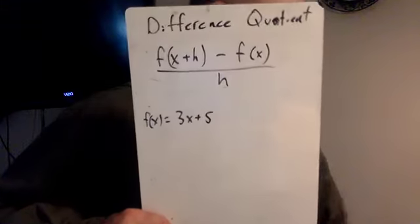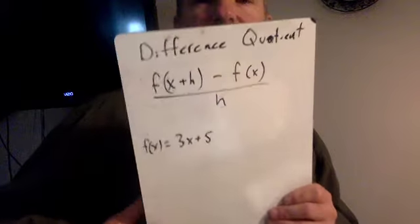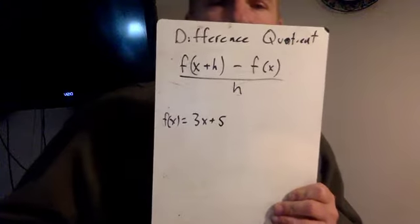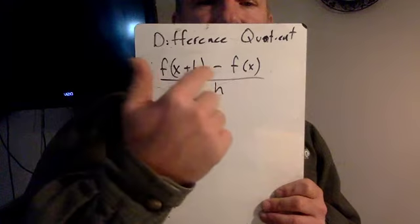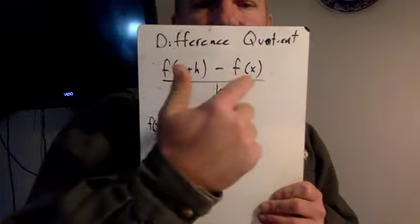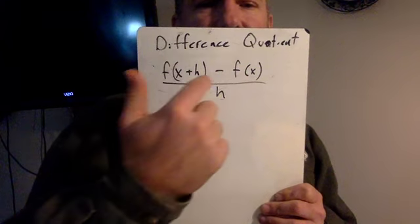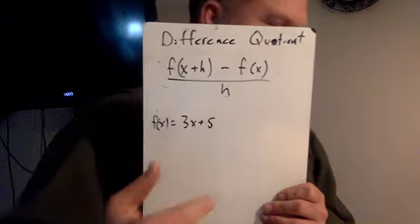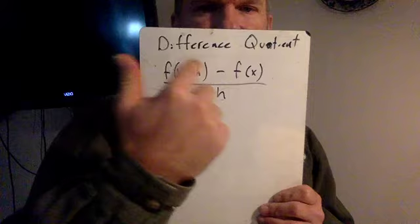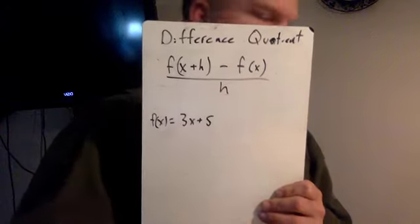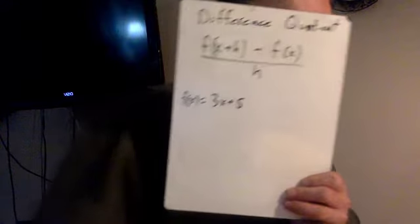All right, here's a fun little problem called the difference quotient, and it's called that because the difference is the answer to a subtraction problem, and the quotient is the answer to a division problem, and this is both. You're subtracting in the numerator and you're dividing by h, so it's the difference quotient.